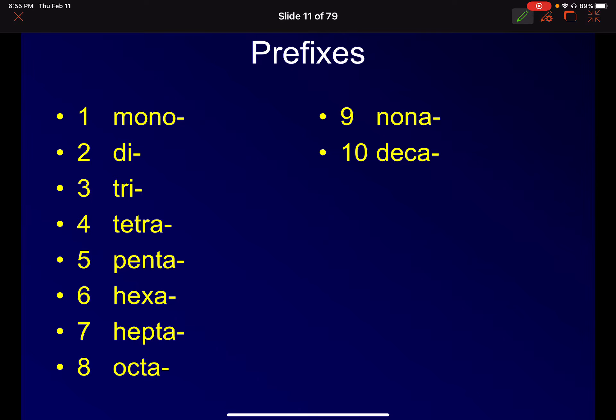So mono di tri tetra. That's one that's always tough because a lot of us, especially those of us that speak the romance languages, you think of quatra or for in that respect, but tetra is the other one. And then penta, you know, like pentagon, pentagram, hexa, hepta, octa, nona, and deca. There are more prefixes, but not the thing that we have to worry about because we're only going to be explaining relatively small molecules.